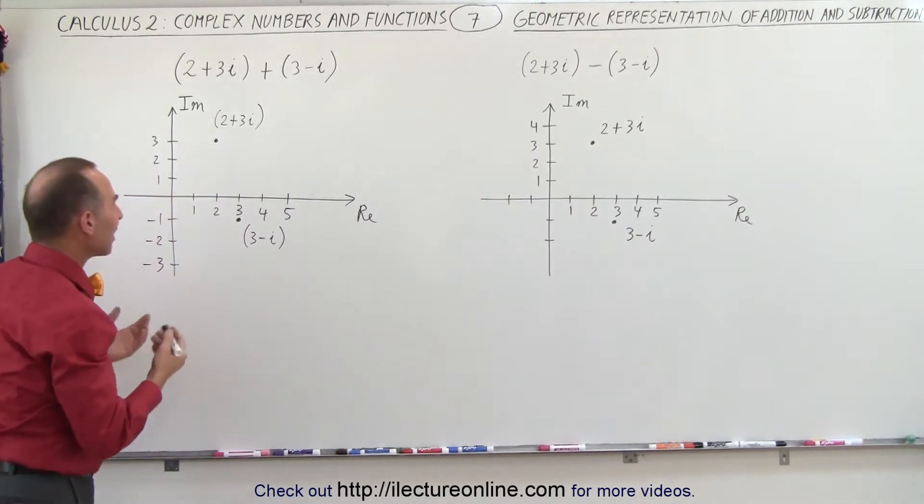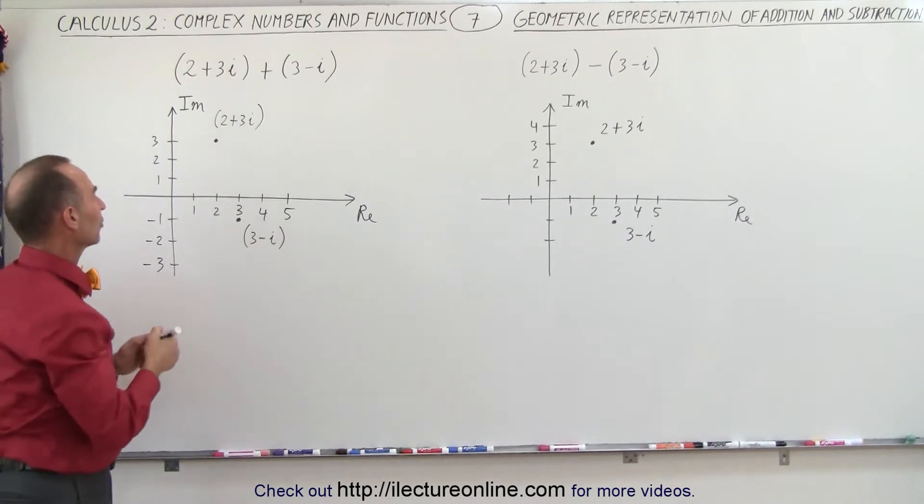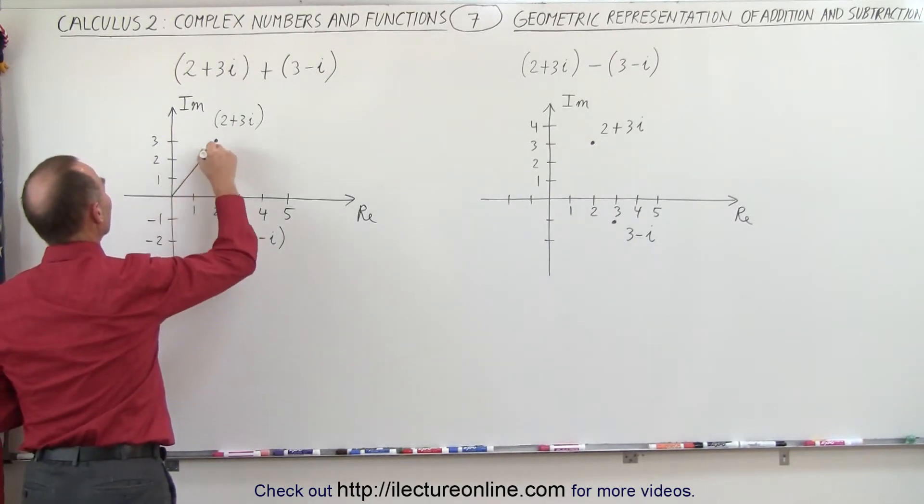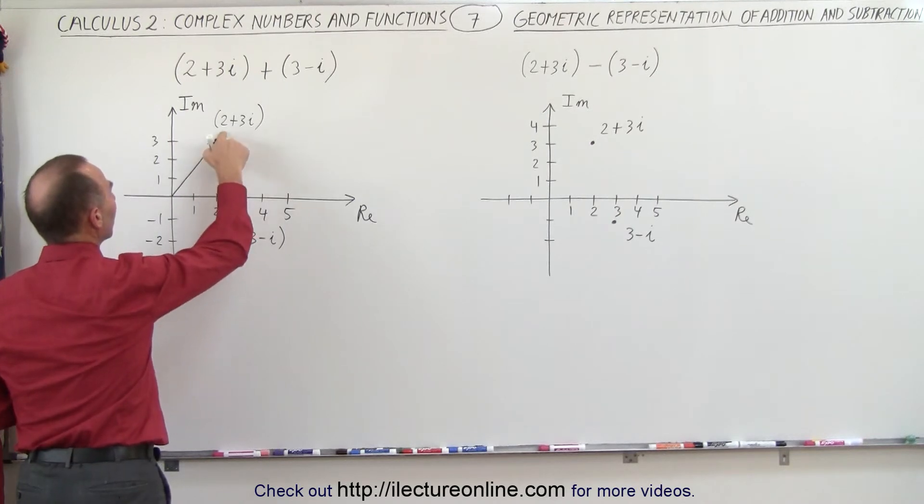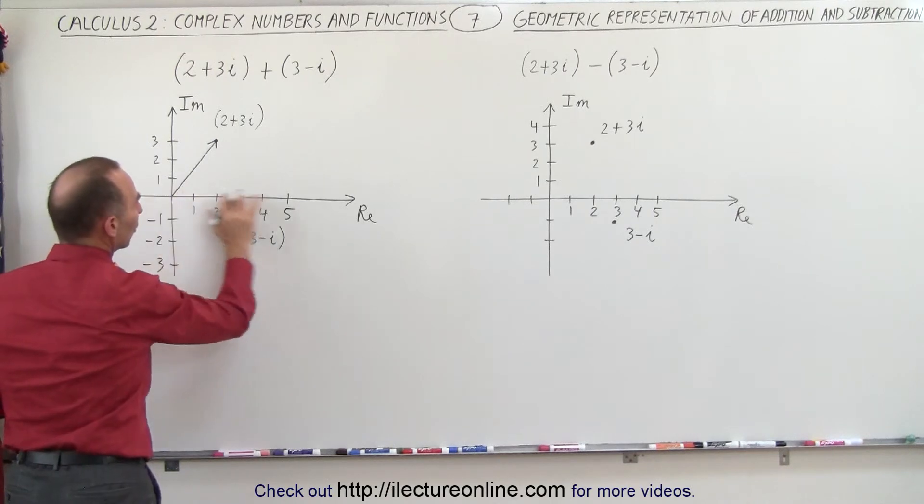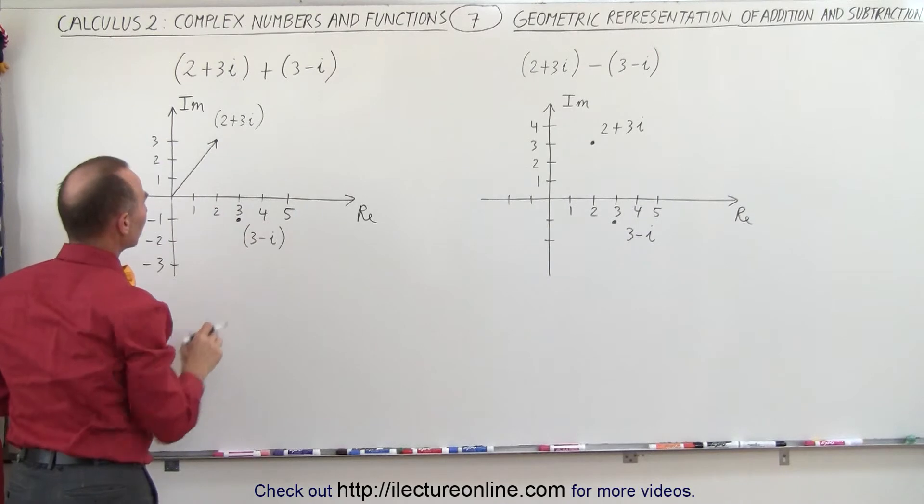Now if we represent these by vectors, because adding complex numbers is very similar to adding vectors, we're going to draw a line to this point right here from the origin. This line is going to represent the complex number 2 plus 3i. This vector has an x component or a real component of 2 units and an imaginary component of 3 units.